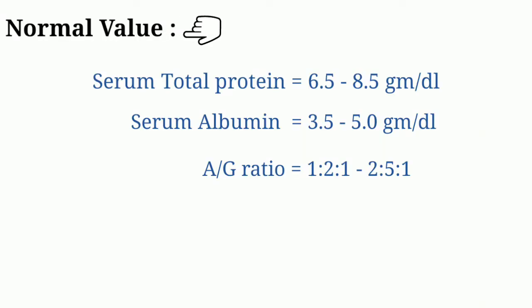Normal values: serum total protein is 6.5 to 8.5 grams per deciliter. Serum albumin is 3.5 to 5 grams per deciliter. The albumin to globulin ratio of 1:2 to 1:1 is considered the normal value.